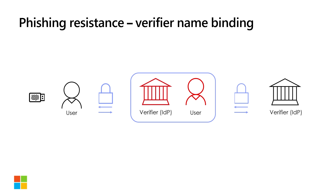Because the verifier identifier — the hostname — is authenticated as part of the WebAuthn protocol and passed via the client-to-authenticator protocol, also known as CTAP, to the FIDO security key to look up the associated secret.